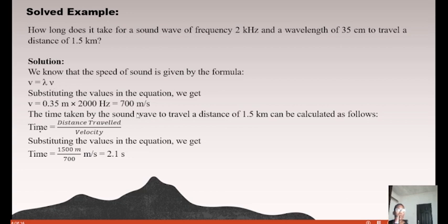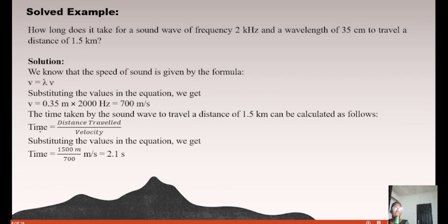Using V = λf: V = 0.35 × 2,000 = 700 m/s. Since velocity = distance ÷ time, we can find time = distance ÷ velocity = 1,500 ÷ 700. The time taken is 2.1 seconds. We already did something similar in the previous class, so this should be straightforward.